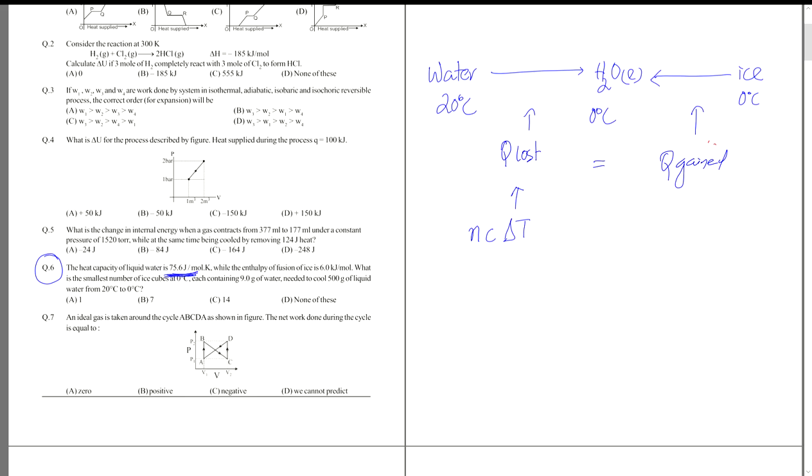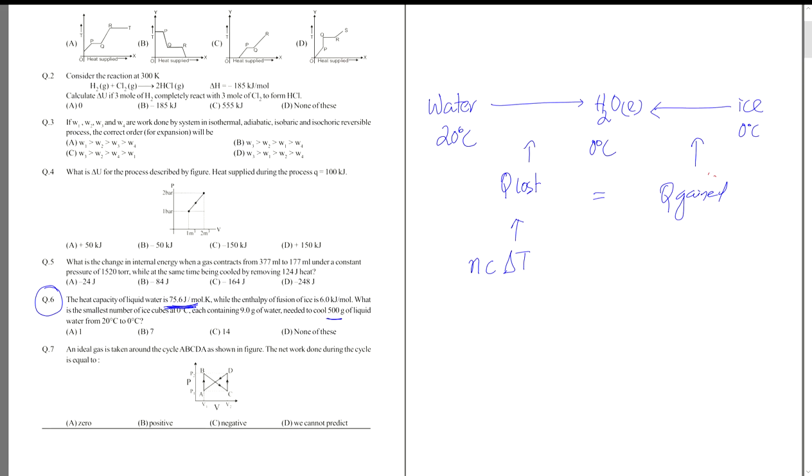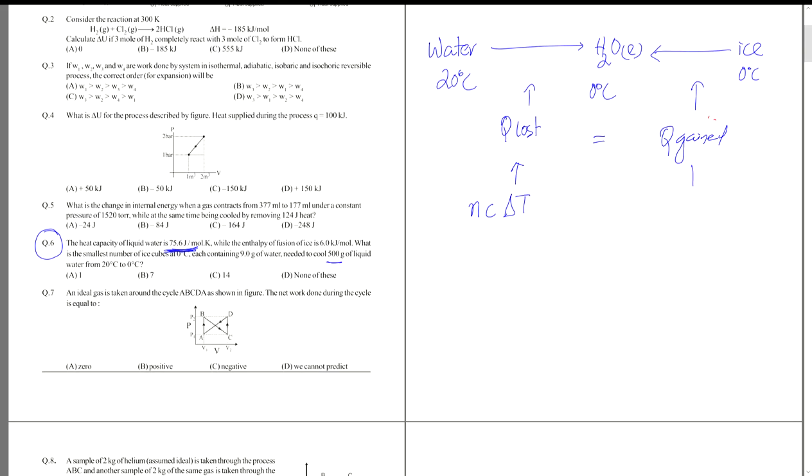Number of moles can be found out because you have 500 grams of liquid water. For the other part where ice melts into liquid water, the heat gain q has to be written as n into L, where L is latent heat of vaporization. This is the value of L that you have given as six kilojoules per mole, enthalpy of fusion.